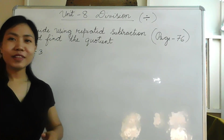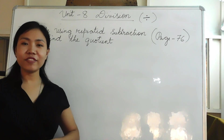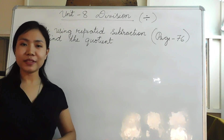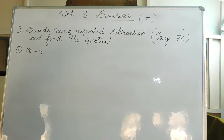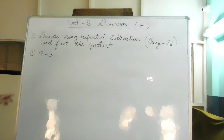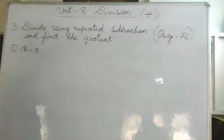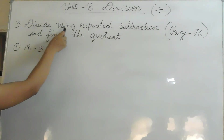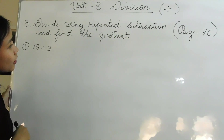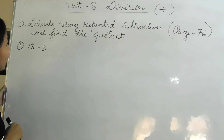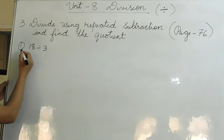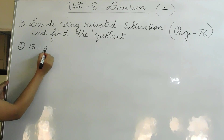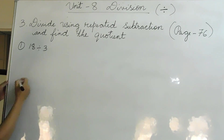Now let's learn division as repeated subtraction, on page number 76, question number 3: Divide using repeated subtraction and find the quotient. Question number 1: 18 divided by 3.